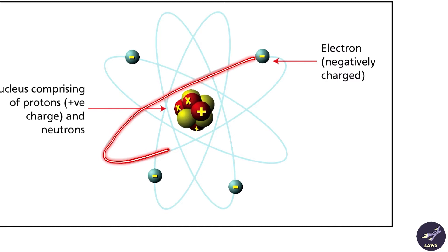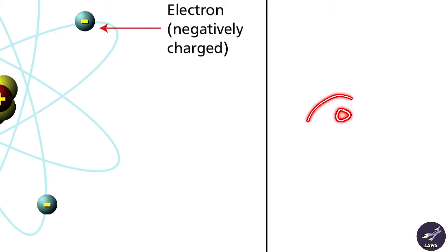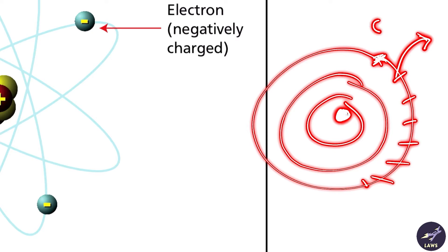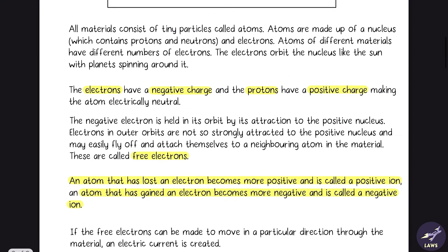These electrons are kept in orbit due to the attraction of the protons — opposite charges attract. But the electrons in the outermost shell are loosely bound and not strongly attracted to the protons in the nucleus. The electrons in this outermost or valence shell have a tendency to eject out and join the neighboring atom. These electrons are known as free electrons.